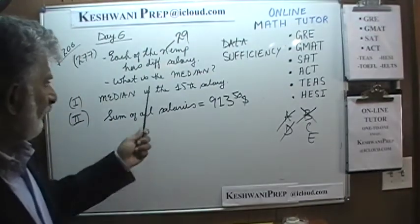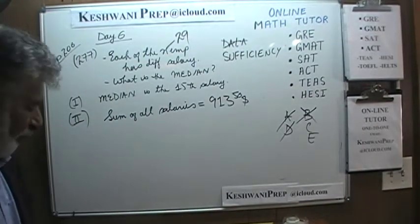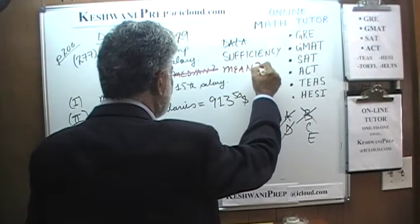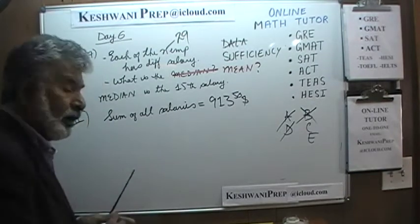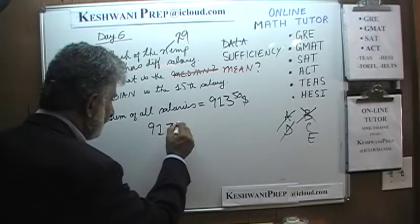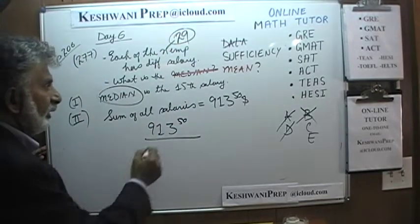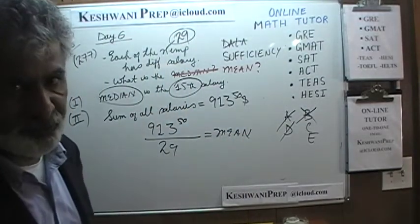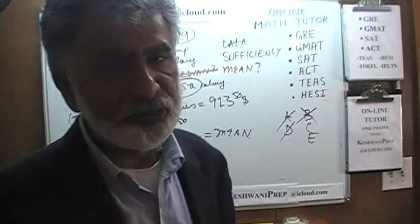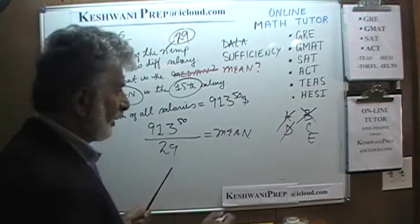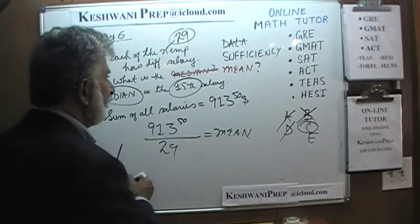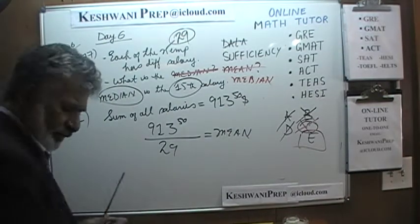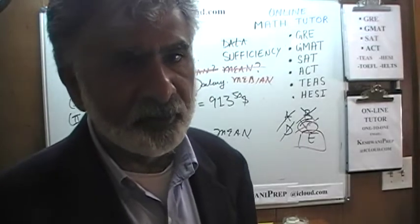What happens if we put the two statements together? This is where they are hoping you will make a mistake. If the question were asking for the mean instead of the median, then putting the two statements together we could answer it: the mean would simply be $913,500 divided by 29 people. But unfortunately that is not what is being asked. We are being asked to find the median, and there is no way to figure out the median just based on the fact that there are 29 people and we know the sum of their salaries. The answer is E.